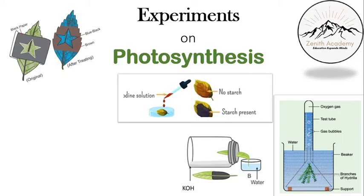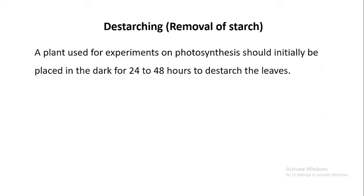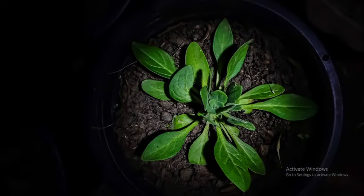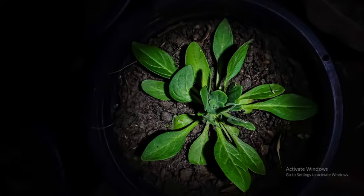First of all we need to destarch. The first step for any experiment is destarching, that is the removal of starch. A plant used for experiments on photosynthesis should initially be placed in the dark for 24 to 48 hours to destarch the leaves, so that all the starch — the food stored in it — is used up.